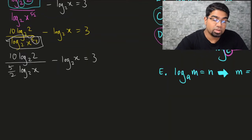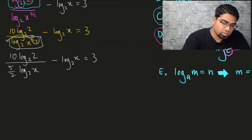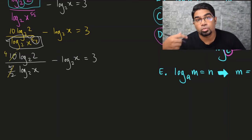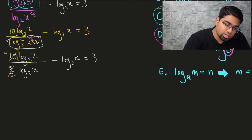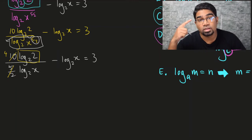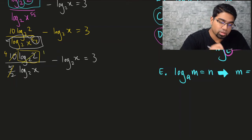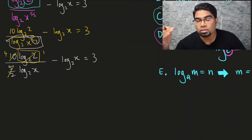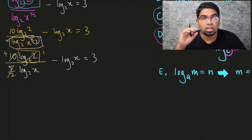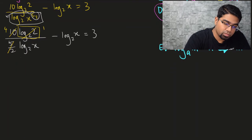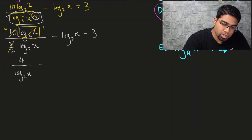Now let's simplify further. First, 10 divided by 5/2 gives us 4. Then, log₂2 — when the base and the number are the same, the value is 1. So log₂2 = 1, and 4 times 1 is just 4. We are left with 4 over log₂x, minus log₂x, equals 3.